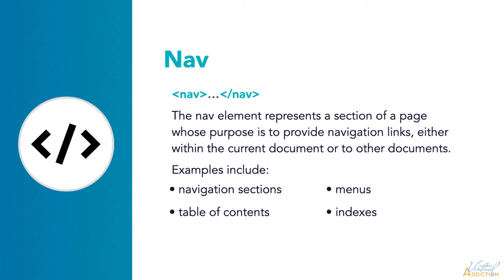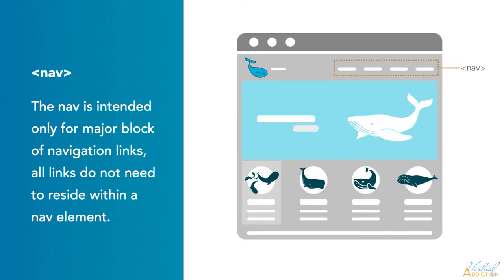The nav element is meant to wrap groups of links that form navigational linking to different parts of the page or other pages on the website. However, just because you have a group of links doesn't mean that it belongs inside a nav element. Global navigation is a good fit. A section menu or table of contents are also a good fit. Footer and utility links could fit as well. Any navigational element could be a candidate for the nav element, although don't feel obligated to include all links within the nav element.